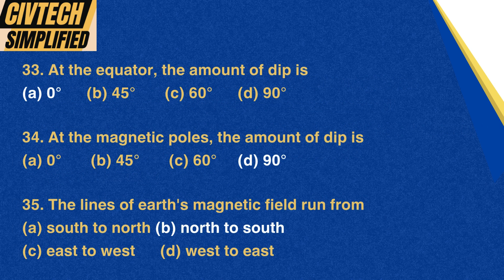Question 33: At the equator, the amount of dip is: A. Zero degrees, B. 60 degrees, C. 90 degrees. Correct option: A. Zero degrees. Question 34: At the magnetic poles, the amount of dip is: A. Zero degrees, B. 45 degrees, C. 60 degrees, D. 90 degrees. Correct option: D. 90 degrees.